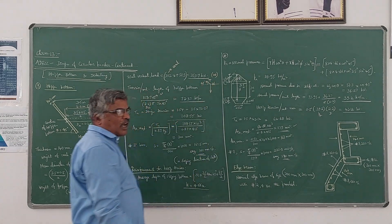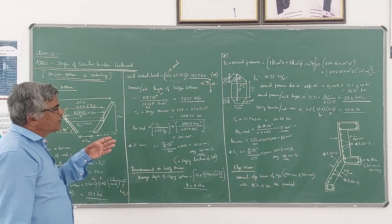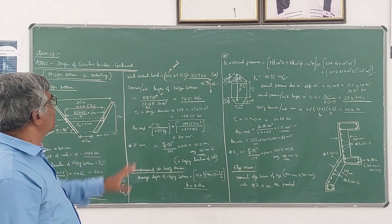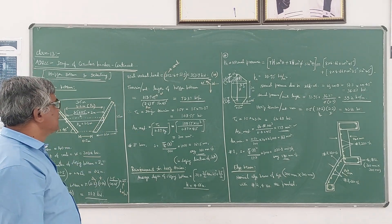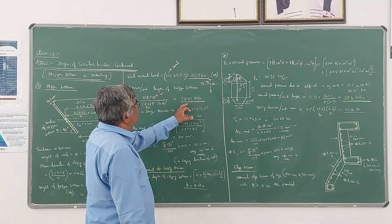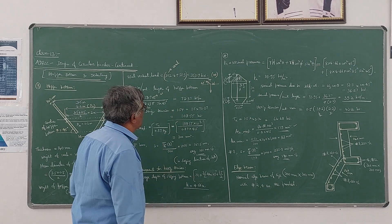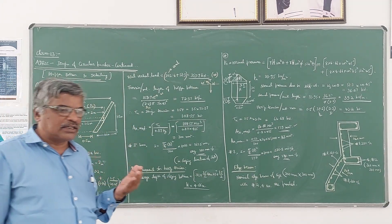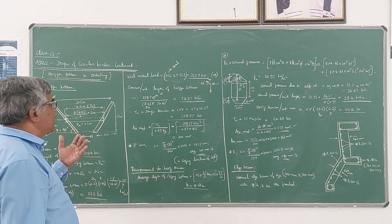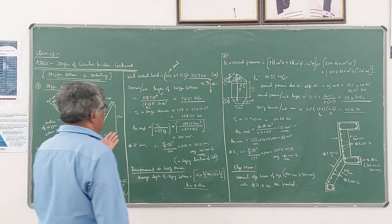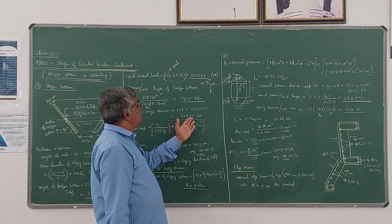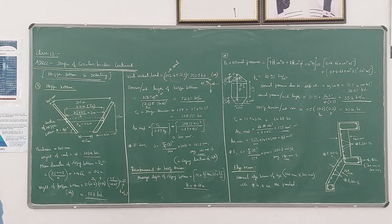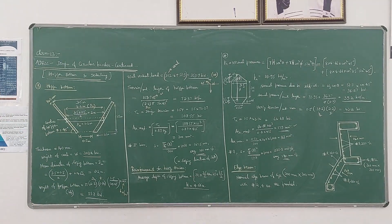Using the equilibrium equation, as explained in the earlier lecture, we get the value of T as 72.37 kN per meter. The factored tension, or the design tension, will be 1.5 times of that, that is Tu, which is 1.5 into 72.37 = 108.57 kN.